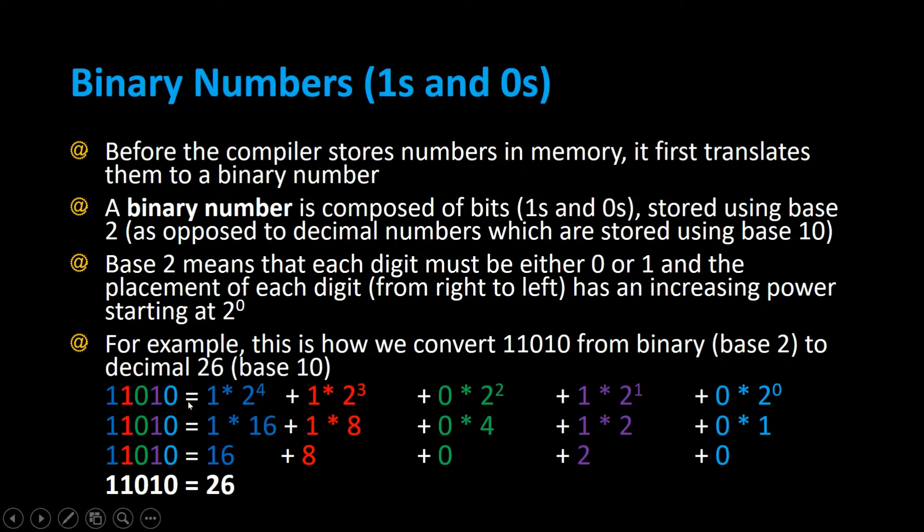Starting at the right hand side, that 0 on the right hand side, we'd multiply it by 2 to the 0 power, then the 1 by 2 to the first power, 0 times 2 to the second power, the 1 times 2 to the third power.